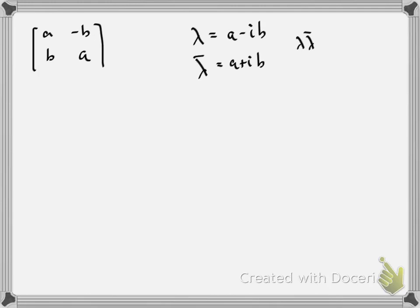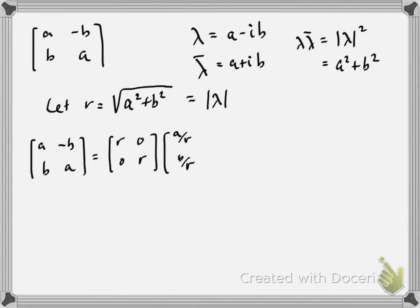Well, if I'm looking at [a -b; b a], and λ is the complex number a - ib, the complex conjugate of λ is a + ib. If I multiply those two, I get the square of the complex norm, which is a² + b². That's the same real number I get if I just compute the determinant of this 2×2 matrix. So we'll let r be the square root of a² + b², so r is just equal to the complex norm of λ.